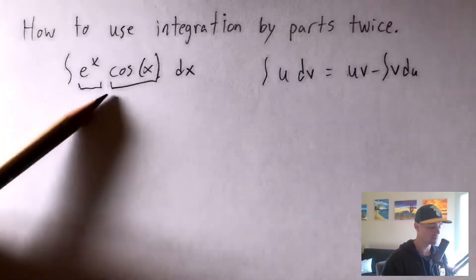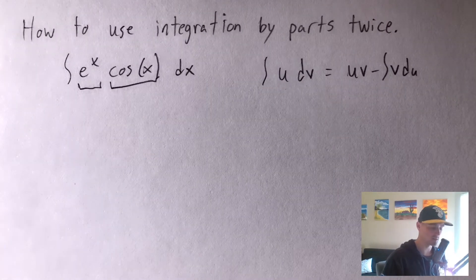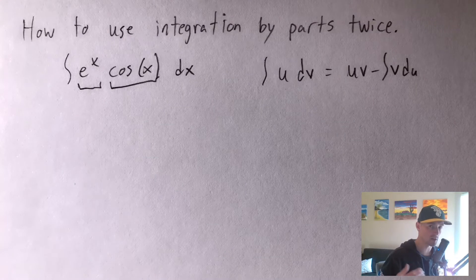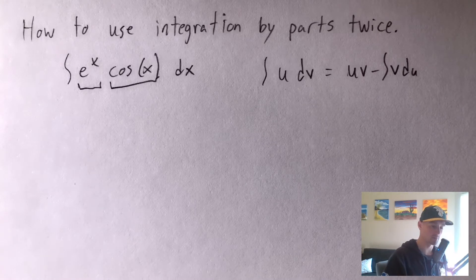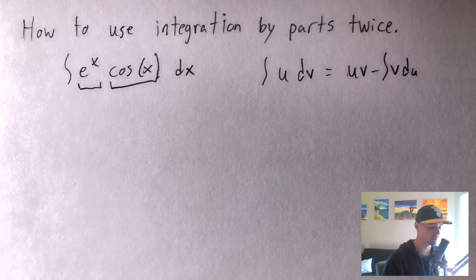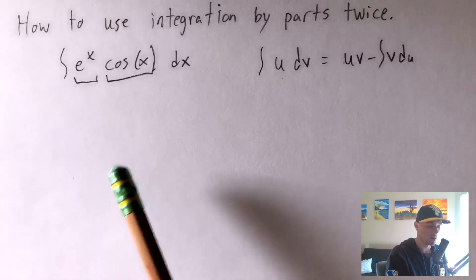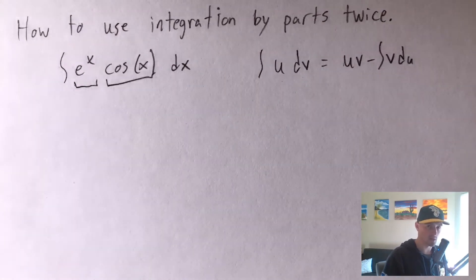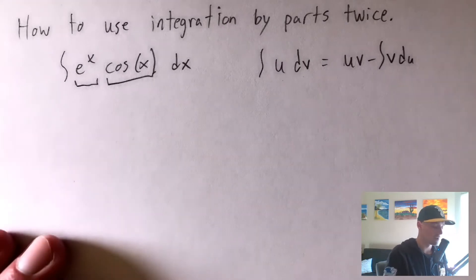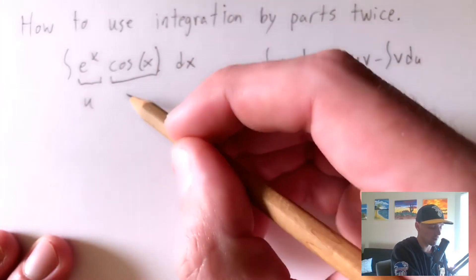And cosine x: its derivative is negative sine x, and its antiderivative is positive sine x. So again, it's not really different — just a constant of negative one or positive one times sine x. That's not going to be any more or less complicated depending on whether we differentiate or integrate cosine x. So there's no right designation here. We'll just call e to the x our u and cosine x our dv.